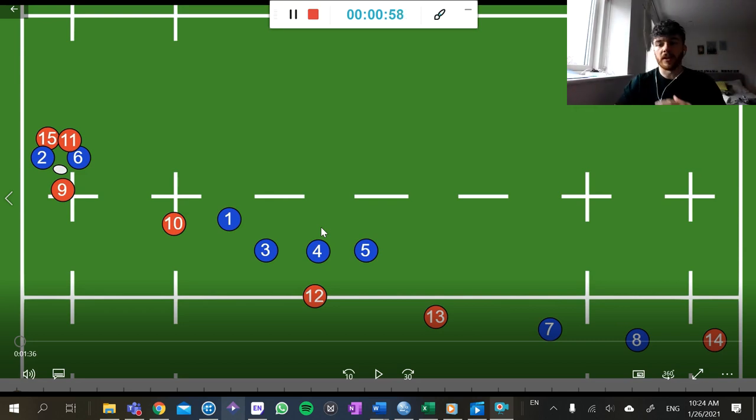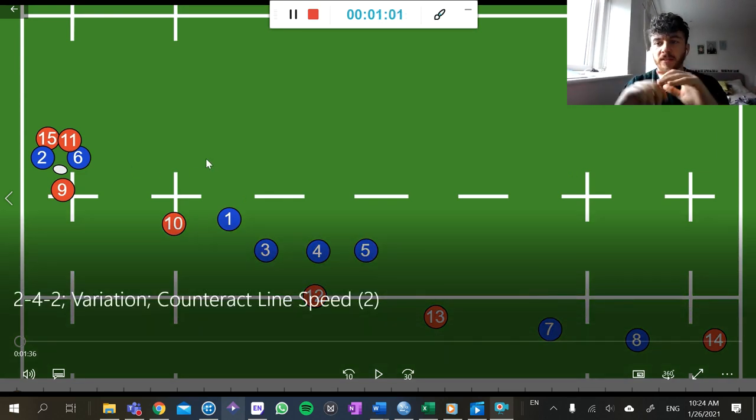So something that we can do to make the defenders hold their feet, hesitate a little bit, is we can start to use our extra man from our pod of 4 as a dummy runner.